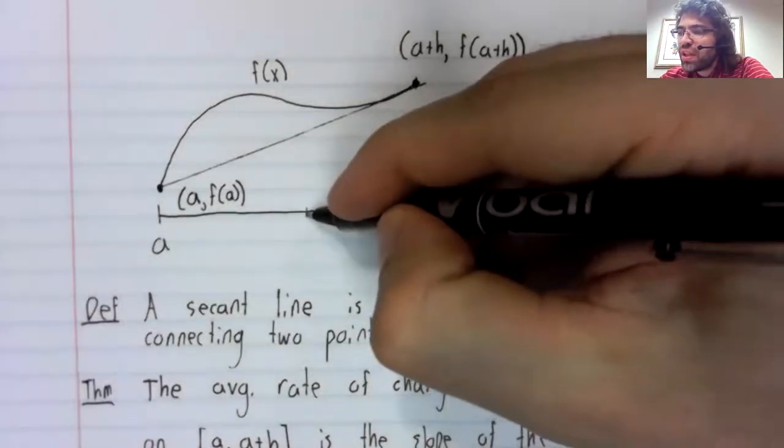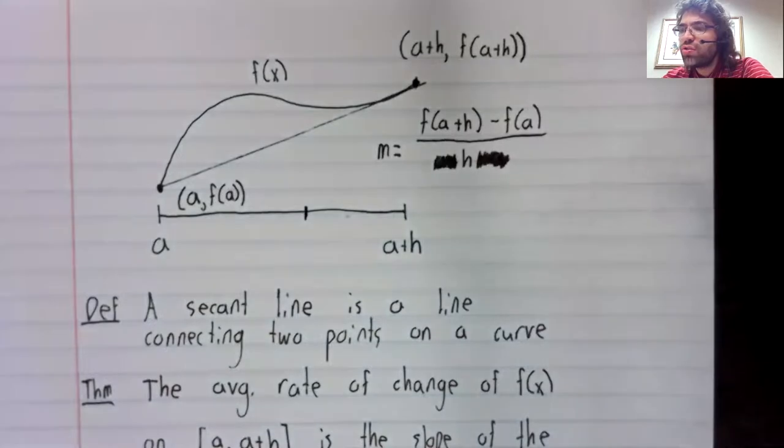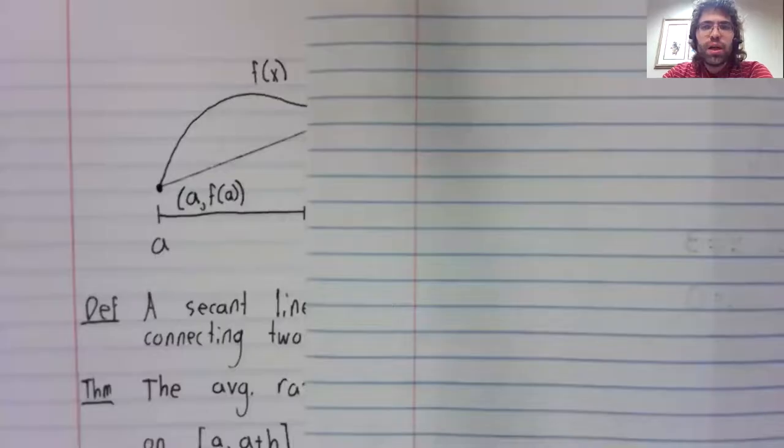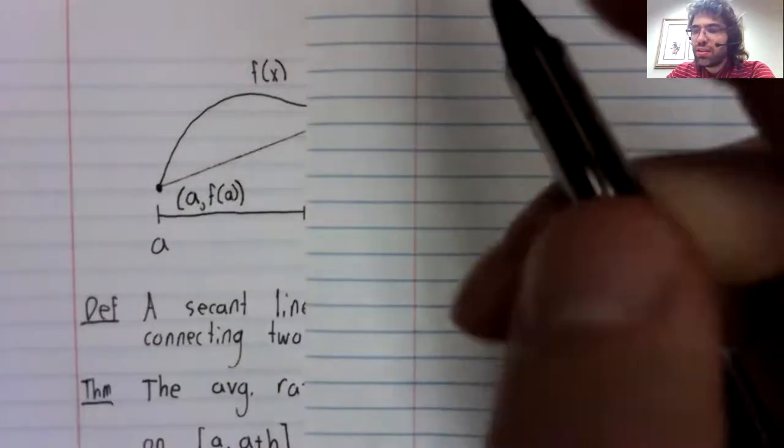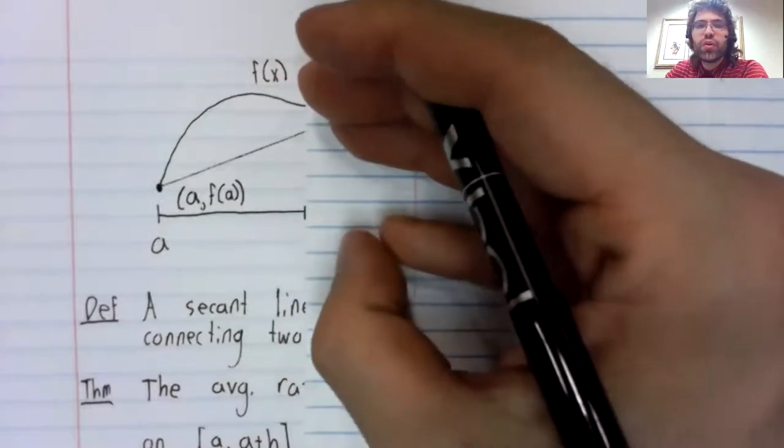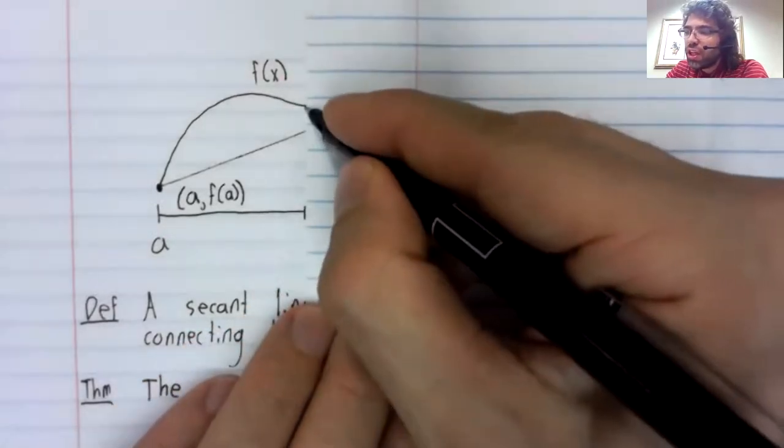Well, as h goes to zero, our average rate of change changes. And of course, our secant line changes. If our interval was now this, then our secant line is now that.